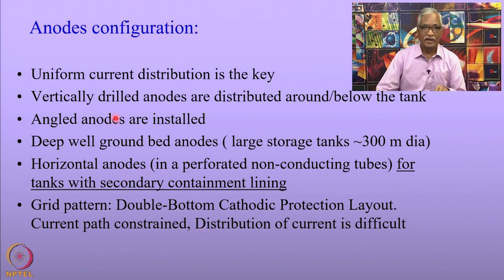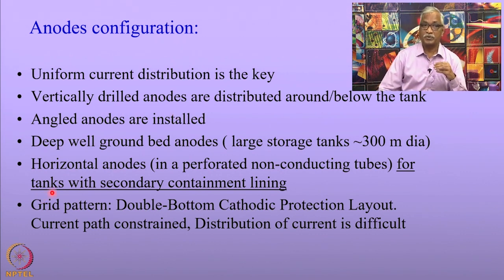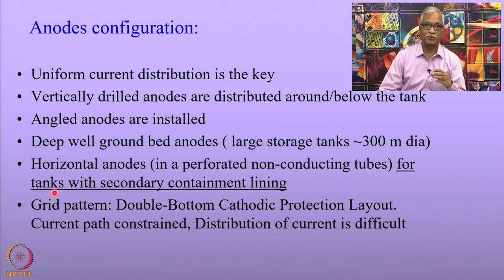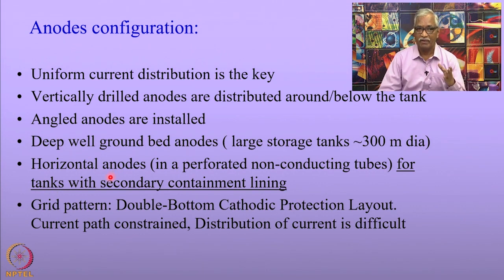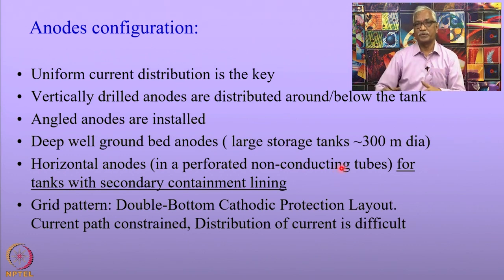We can also have vertically drilled anodes distributed around the tanks so that the current is uniformly distributed, or we can have angled anodes which give even better distribution of current. Where distributed anodes cannot be used, deep well ground bed anodes can be installed for large storage tanks of around 300 meter diameter.